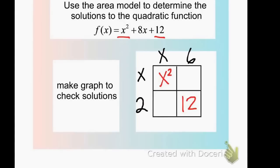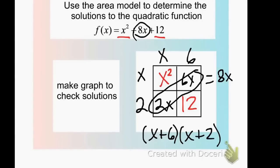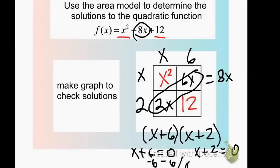The numbers 6 and 2 multiply to give us 12. Let's check: 6 times x is 6x, and 2 times x is 2x. When we combine those, 6x plus 2x equals 8x, which is our middle term. So our factors are x plus 6 and x plus 2. Using the zero product property, we set x plus 6 equal to 0 and x plus 2 equal to 0. Subtracting 6 gives x equals negative 6, and subtracting 2 gives x equals negative 2.